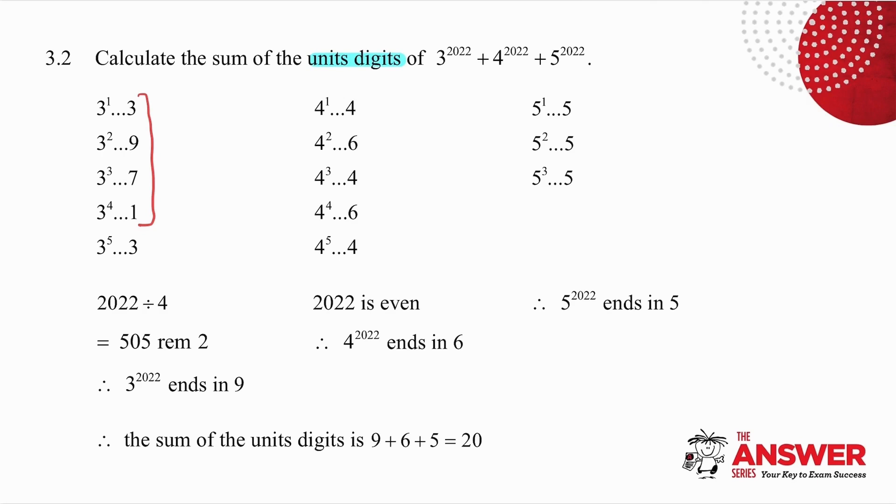So I take 2022 and divide it by 4. I get 505 remainder 2. That tells me there are 505 of these groups. What is important is the remainder. Remainder 2 tells me that I'm two parts into the next group. In other words, the units digit is going to be 9.